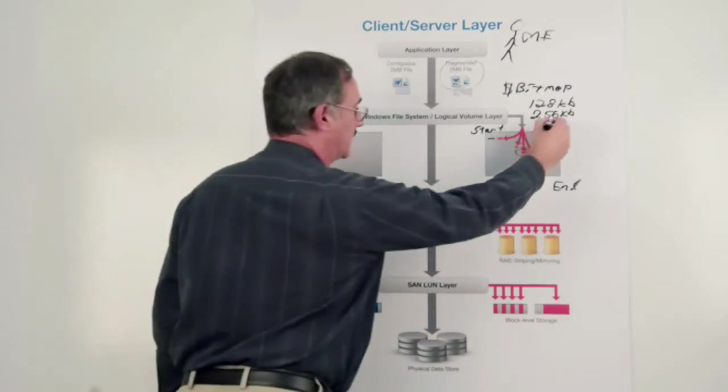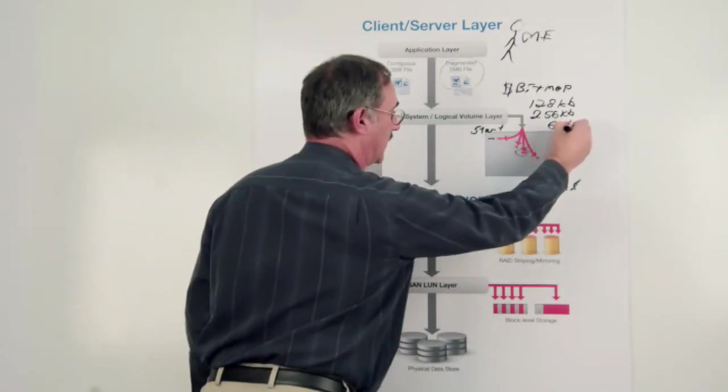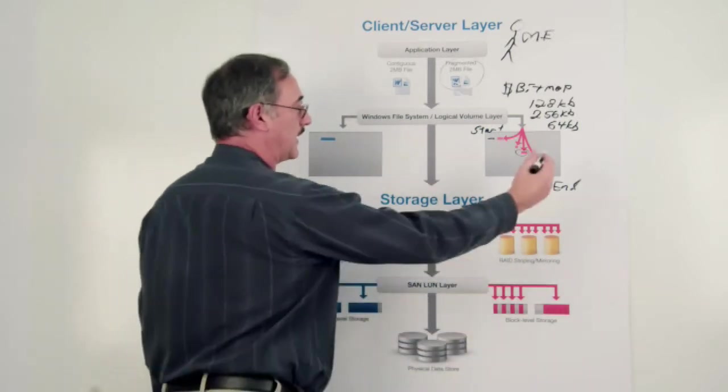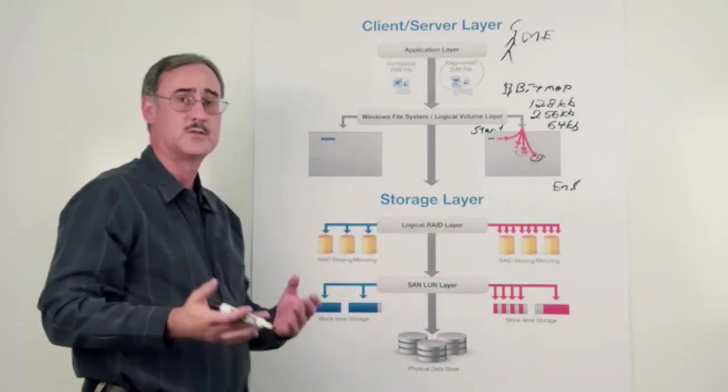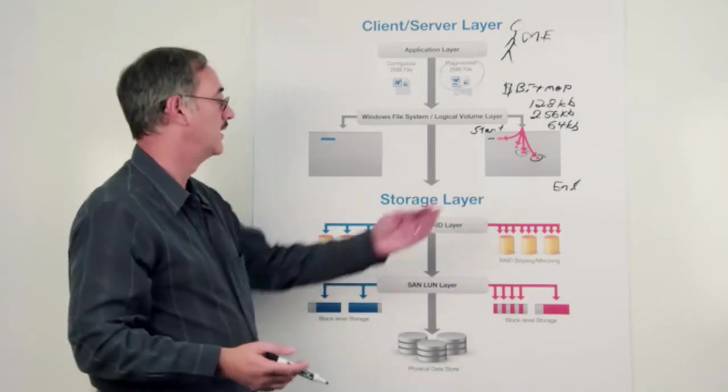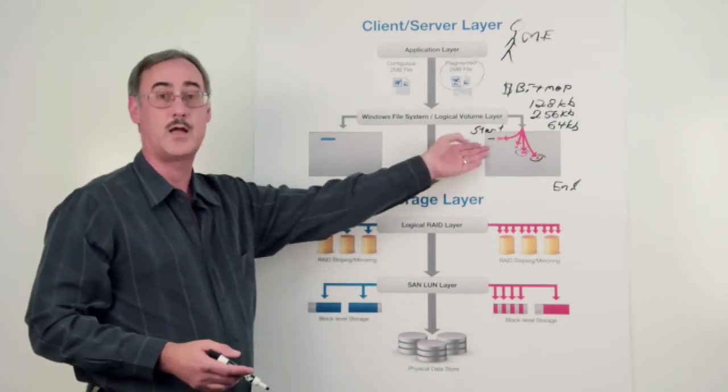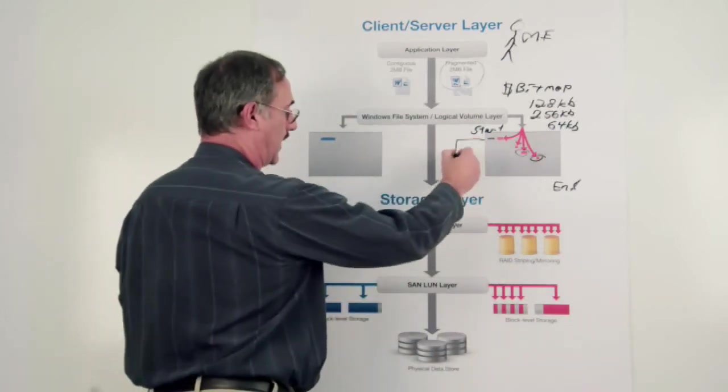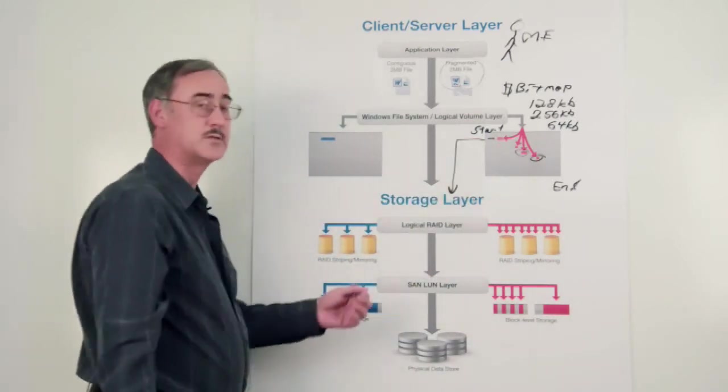And maybe the next chunk of space is only 64 KB in size, and that's right there. So you can see that as the number of extents to a file build up, each of these extents maps to a different range of logical clusters. As a result, each of these IO requests has to be communicated down to the next level.